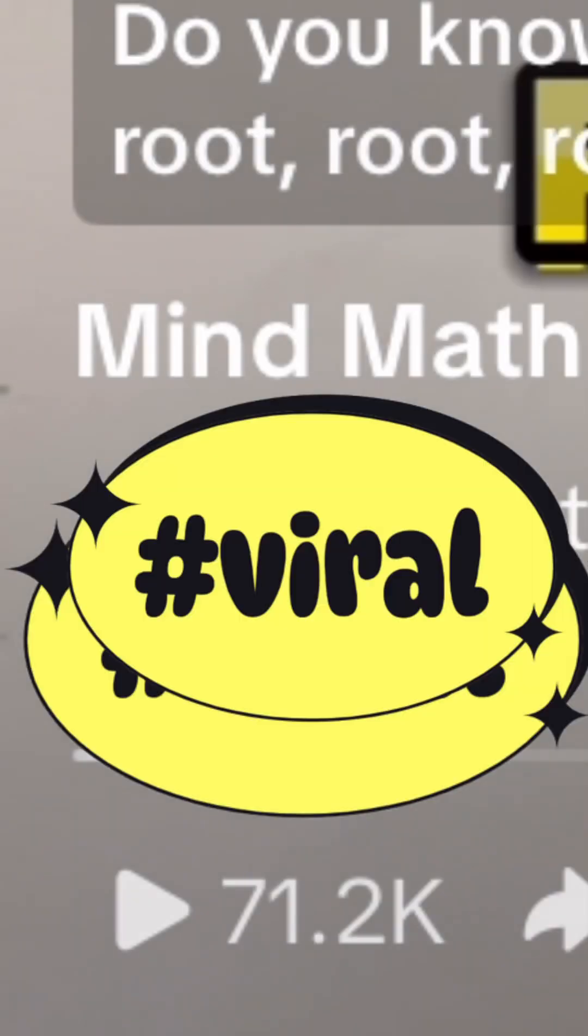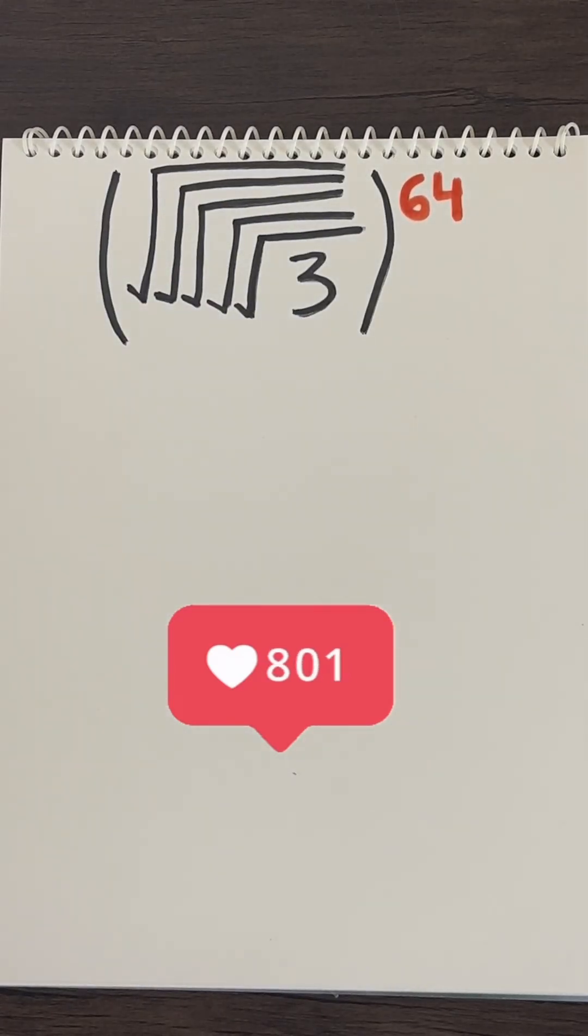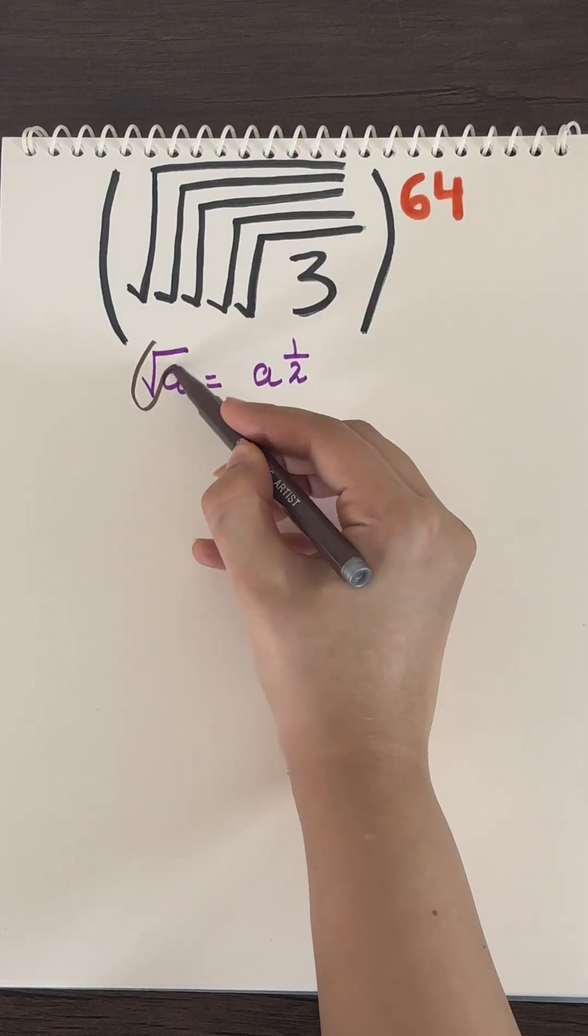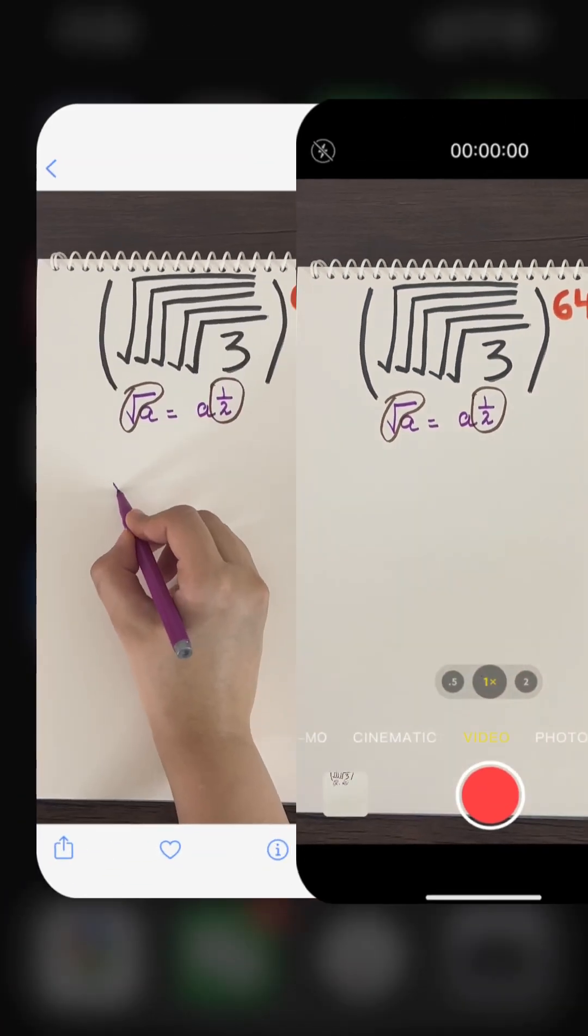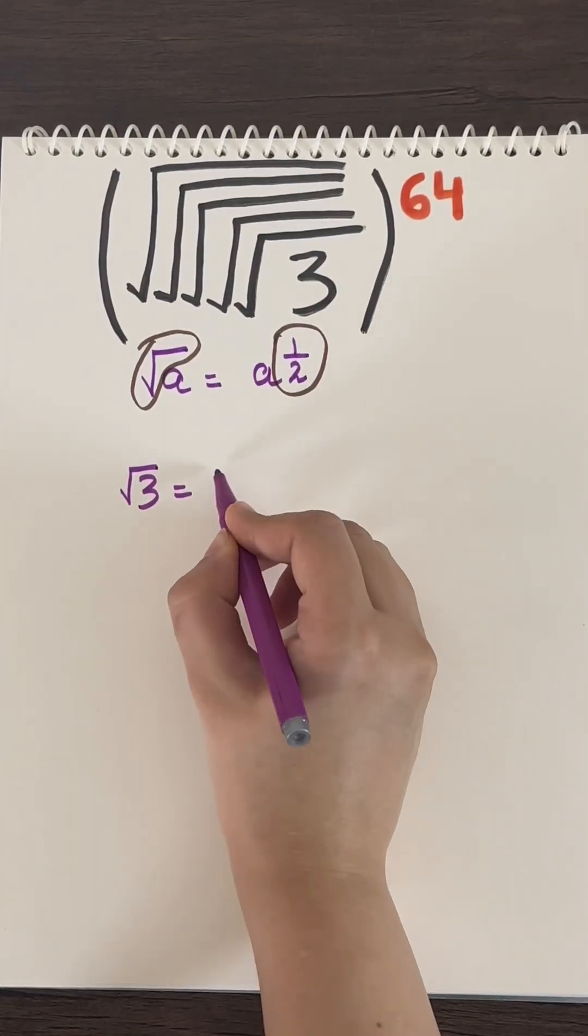I uploaded this video and it went viral. Now I will tell you how I did it. The root of any number is equal to its half. For example, the root of three is written as three raised to the power of one half.